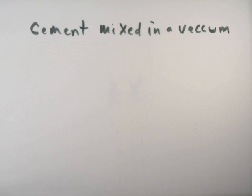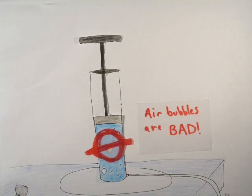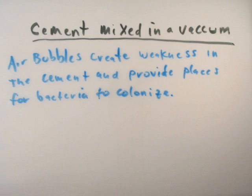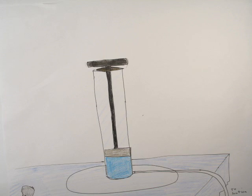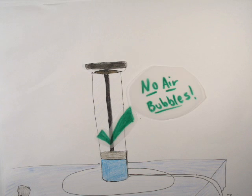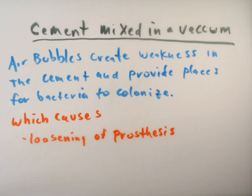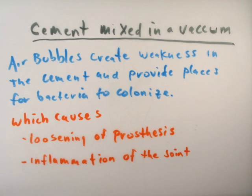It is important to mix cement in a vacuum to decrease air bubbles. Air bubbles not only compromise the integrity of the cement, but provide more spaces for colonization. This can cause loosening of the prosthesis and inflammation in the joint.